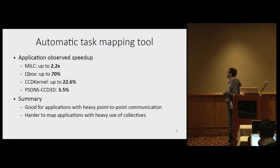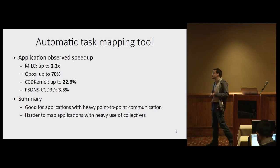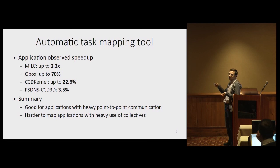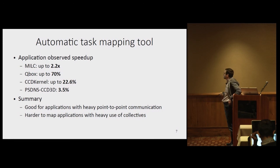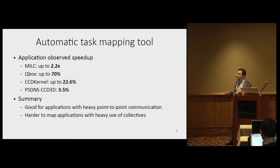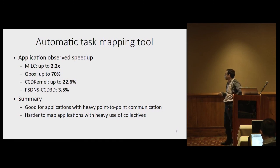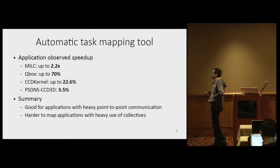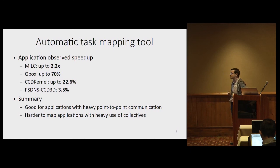These are some of the speedups we observed with different applications. With MILK, we saw very large speedups — this is with large job sizes, like 1,000 to 4,000 nodes, because with small job sizes communication performance matters less. One important observation is that the tool works best when the application makes heavy use of point-to-point communication. If you have heavy use of collectives or a mix, things get trickier. QBox uses a lot of subgroup all-to-alls and still shows good speedups, though other applications show smaller gains. It's highly dependent on the application and communication patterns, but still worth a try.